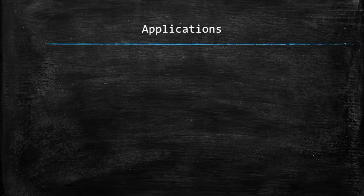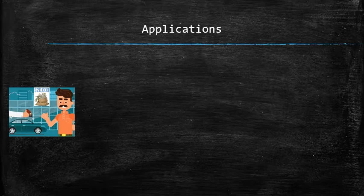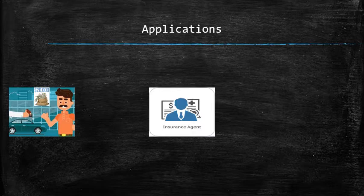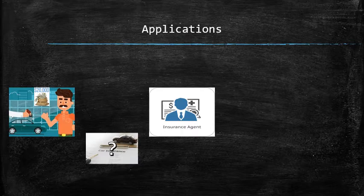Another application of discrete random variables is in the insurance industry. Let's say Bobbert just purchased a new car and wants to purchase an additional insurance policy against totaling his new car. So Bobbert goes to an insurance agent's office and says, I want to purchase a policy against totaling my $20,000 car. What happens next?